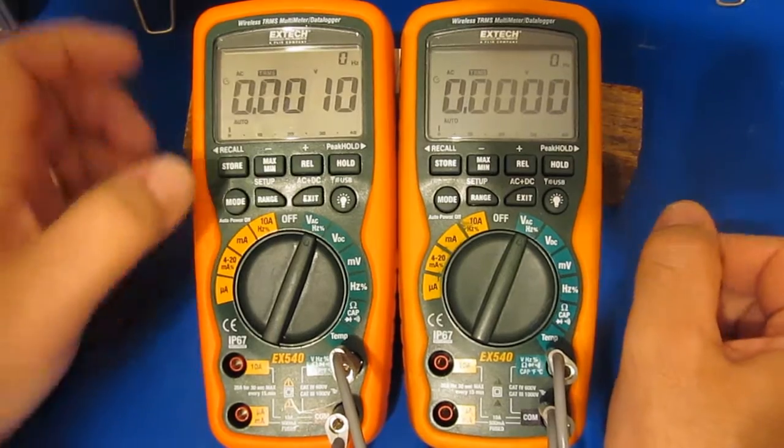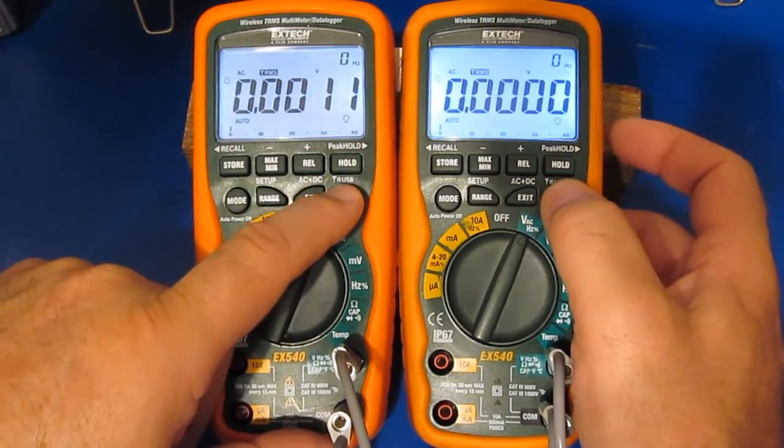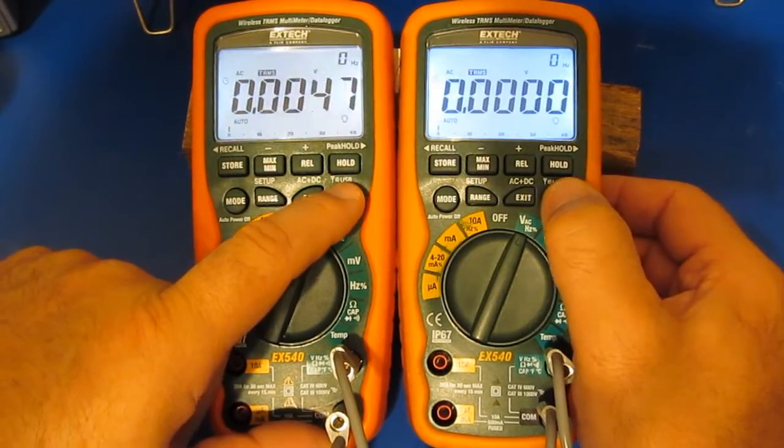So watch this. I put both meters into AC volts mode. Of course, the original meter is reading zero, and watch what happens here as I select the backlight.